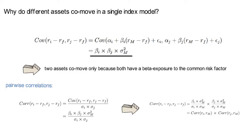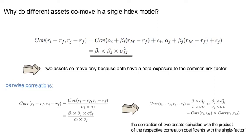You can rewrite that as the product of both correlations. That last equation states that the correlation of two assets within that single index model coincides with the product of the respective correlation coefficient with the single factor.